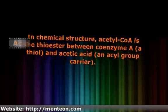Acetyl-CoA is produced during the second step of aerobic cellular respiration, pyruvate decarboxylation, which occurs in the matrix of the mitochondria. Acetyl-CoA then enters the citric acid cycle.